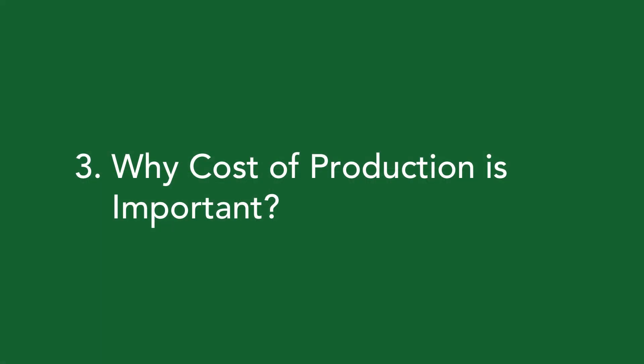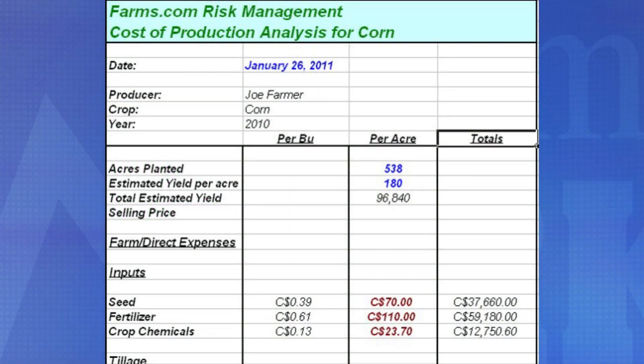Our third topic today is about knowing your cost of production and why it's important. We're going to cover cost of production in a separate video, but for now we're just touching on it briefly. Here's an example of a tool I use for my own corporate farm, where I'm entering in total acres, yield, and my costs — whether fixed or variable — to come up with my break-even. Understanding production costs is important because it can help you determine break-evens, profits, and when to pull the trigger. Good records are critical.